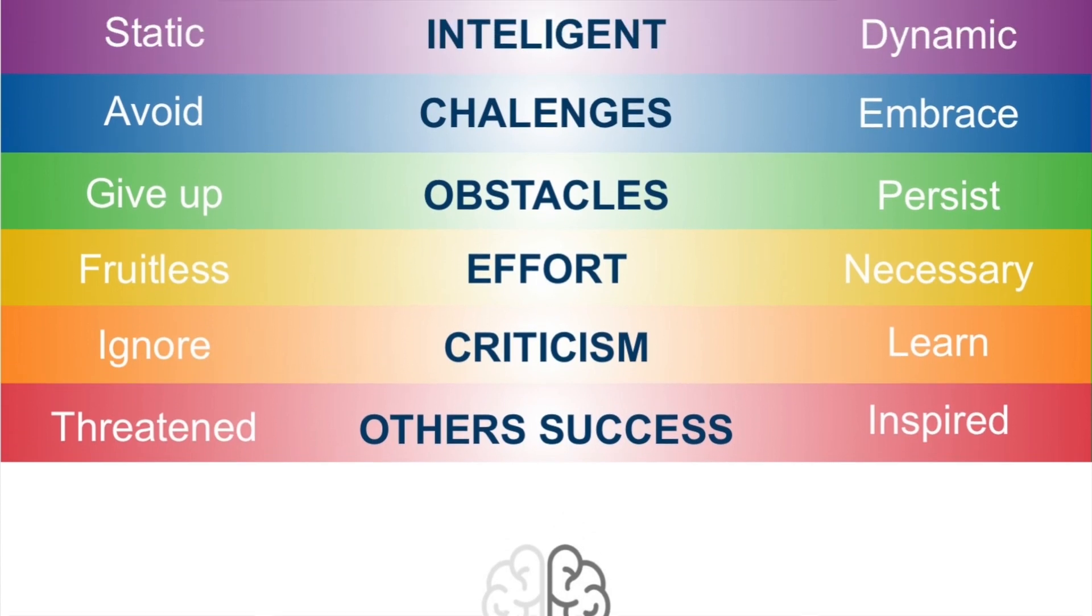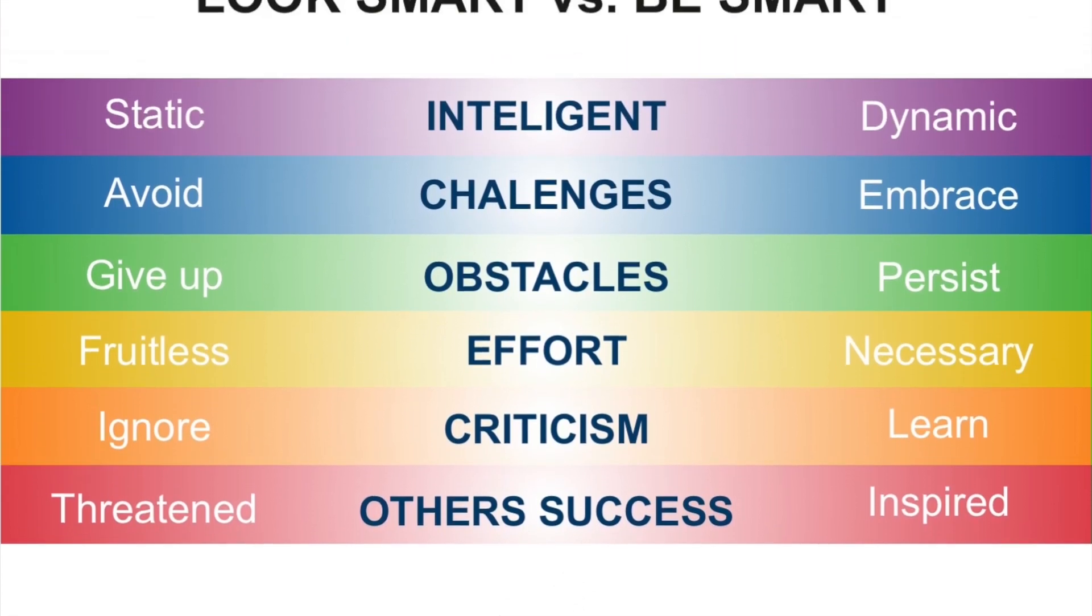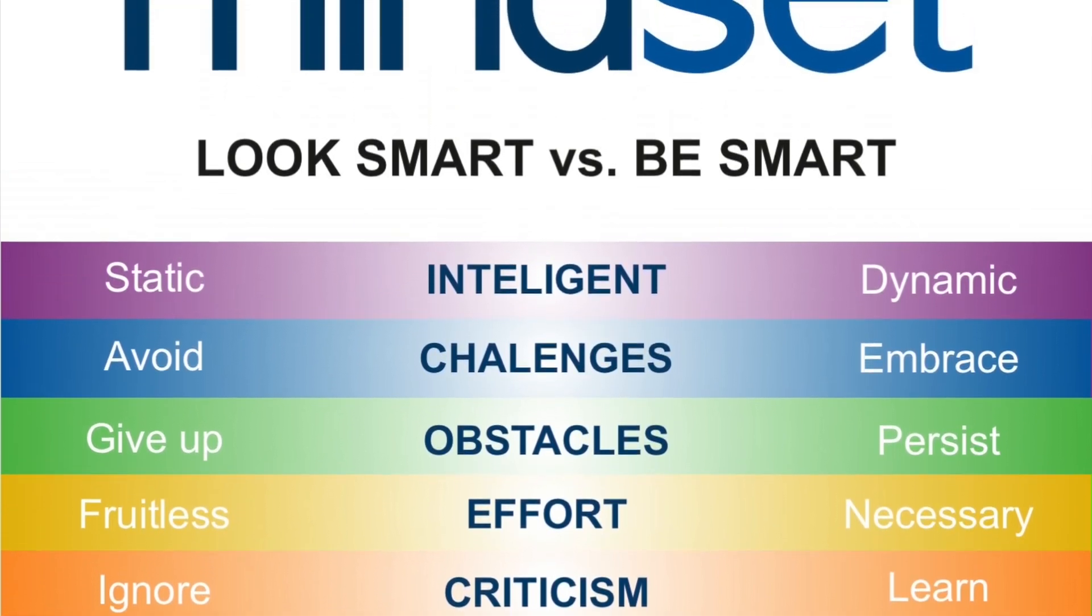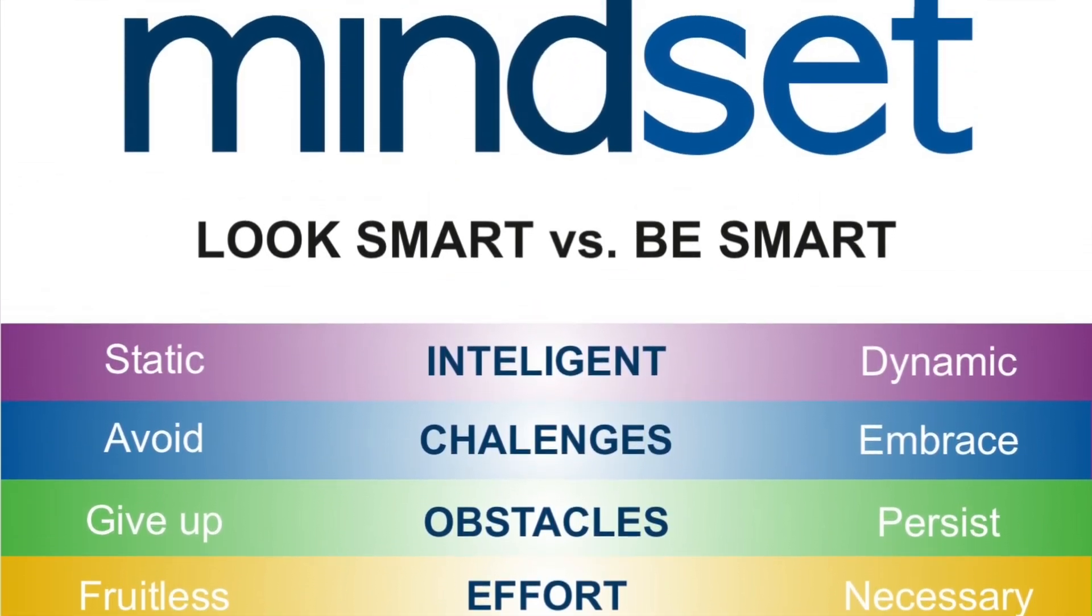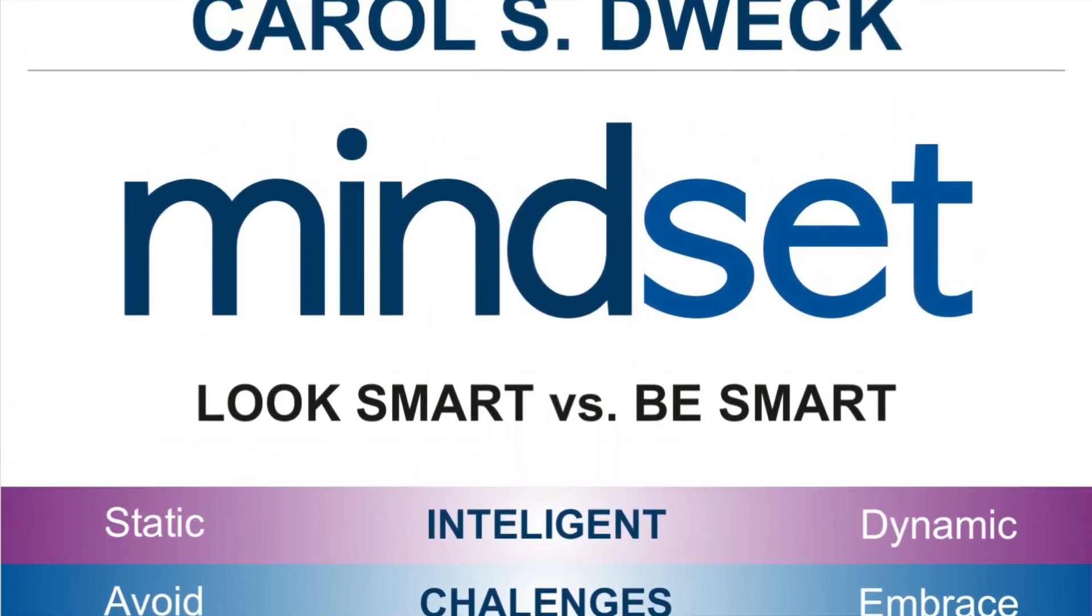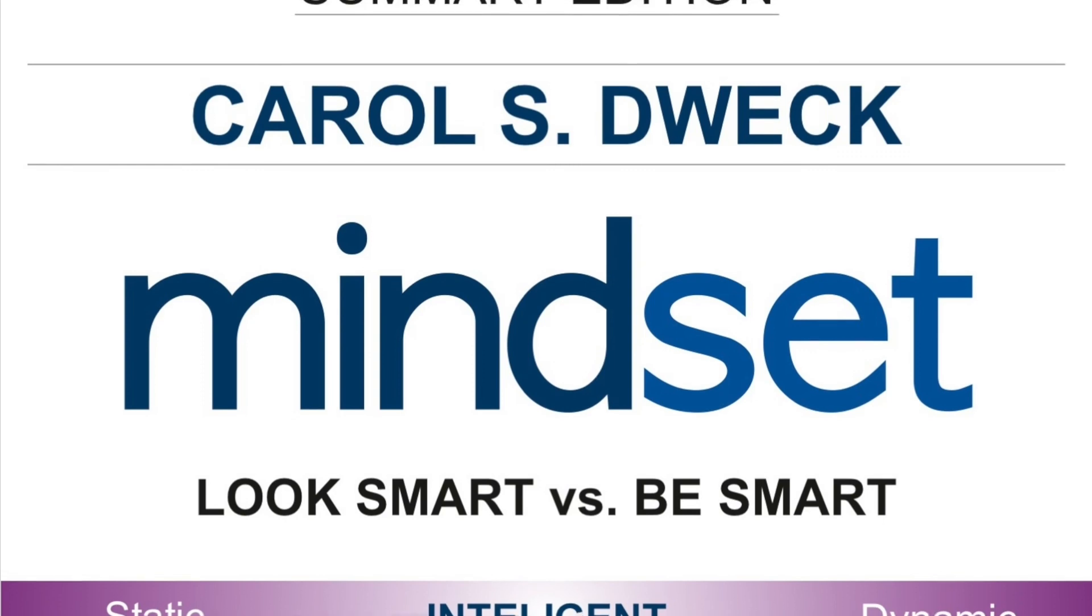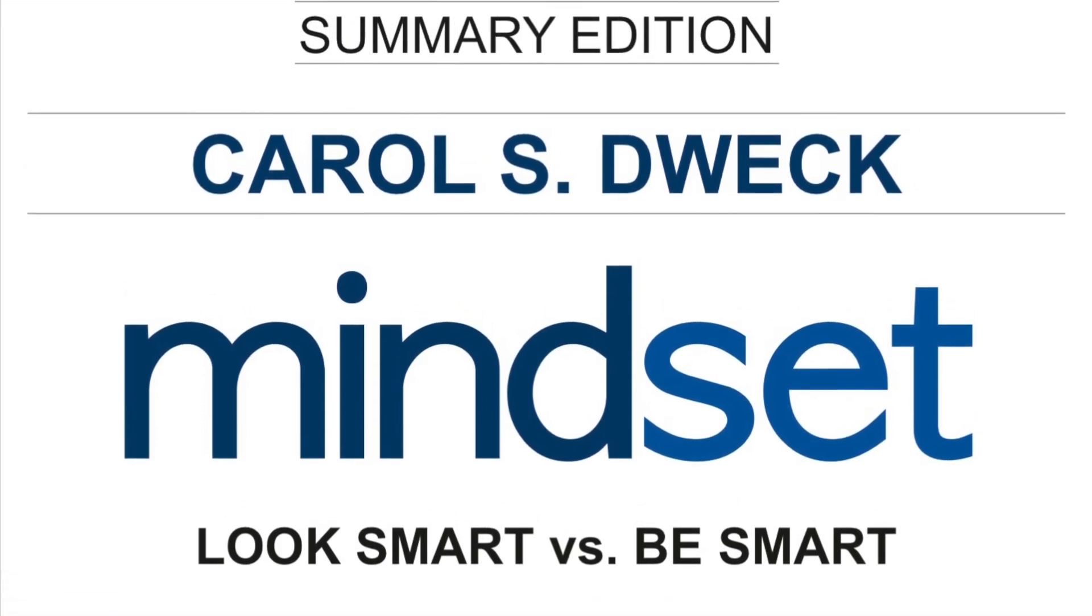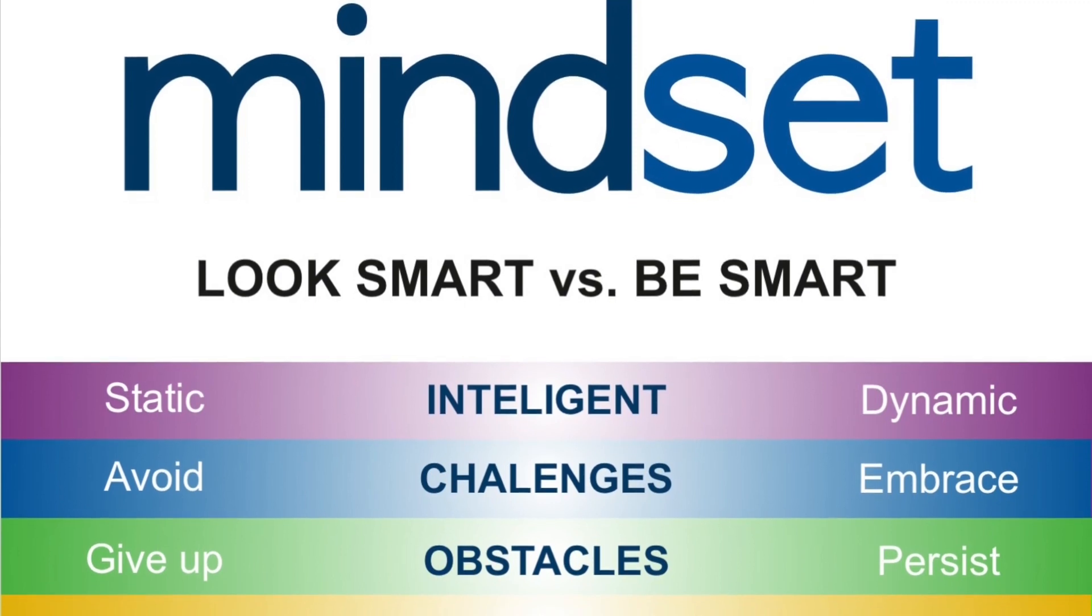On the other hand, fixed mindset people want to look smart because they think intelligence cannot be developed. They always avoid challenges, give up easily, don't give effort, ignore criticism, and feel threatened by the success of others. Growth mindset and grit are more important than talent.